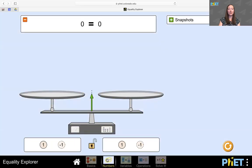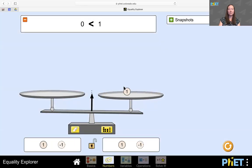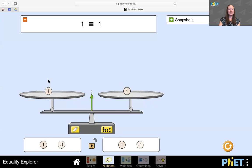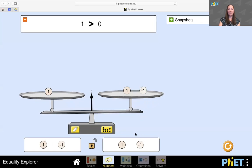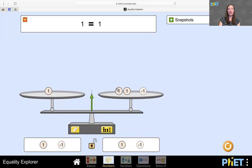Now on the second screen, again, I can play around with this balance. But here I have positive and negative integers to play with. I also have a new tool, which is this lock here. So if I click the lock, I notice that now I can drag objects up to the scale and also off of it at the same time.